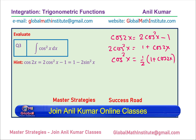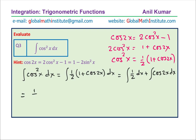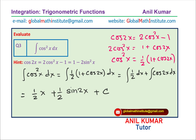Let us rewrite the given integral of cos²x dx. That equals one half times 1 plus cos2x, which we can split as the integral of one half dx plus the integral of one half cos2x dx. The integral of one half is one half x, and the integral of cos2x is one half sin2x, plus constant c. With that, we found the integrals of all three without any problems.